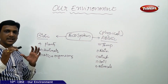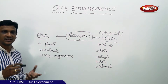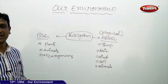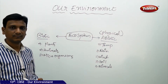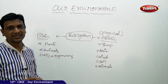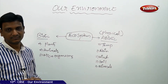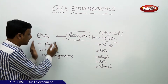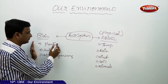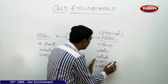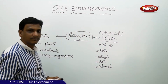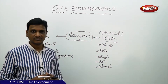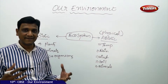In any ecosystem, it consists of plants, animals, and microorganisms that interact with each other. The biotic components interact with one another and also interact with the abiotic components, affecting each other.